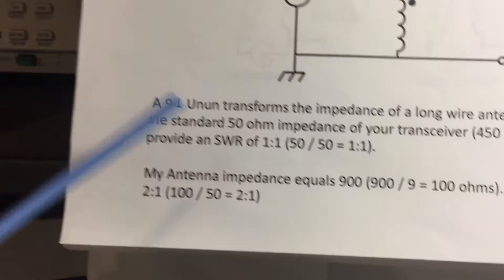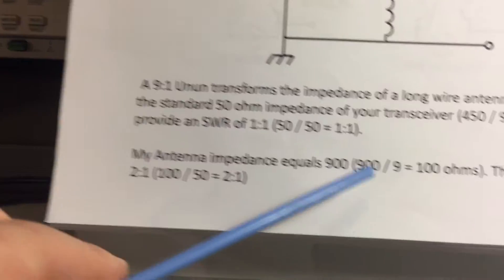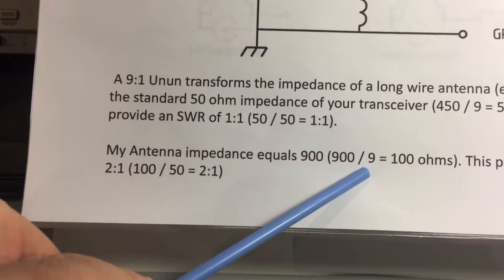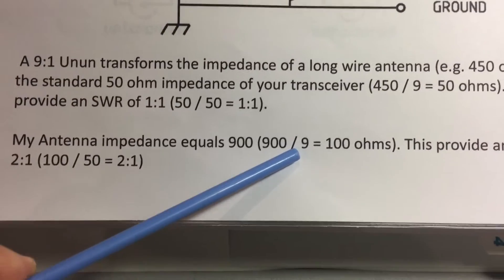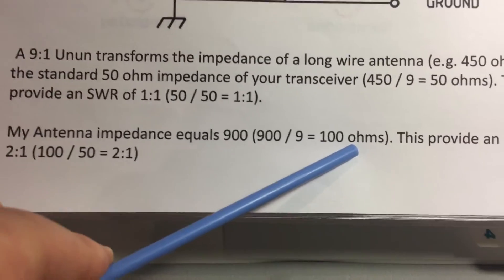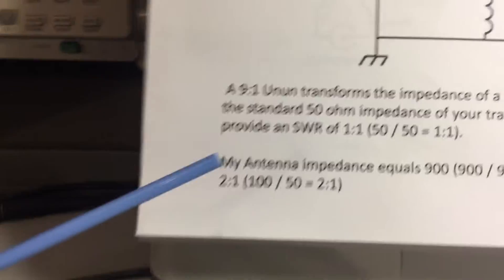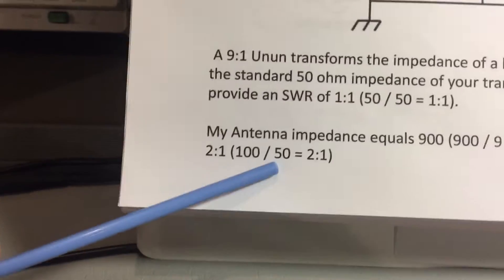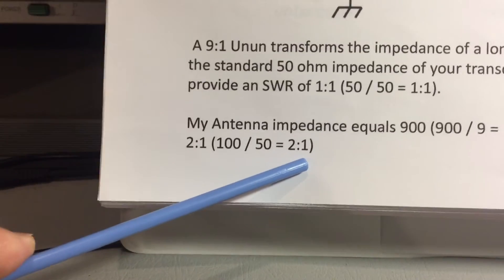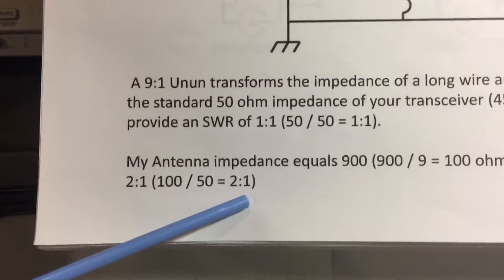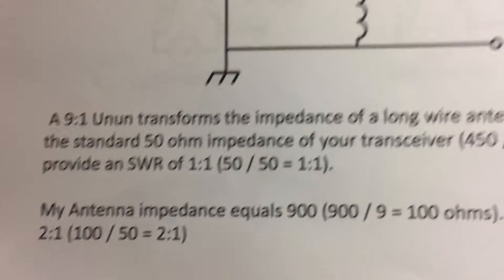Now my long wire antenna is actually around 900 ohms. So where does that leave us? I got 900 divided by again, it's the same ratio of 9 to 1, so divided by 9 is 100 ohms. So this provides an SWR of 2 to 1.